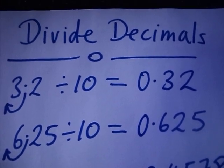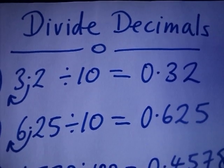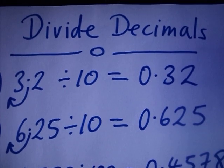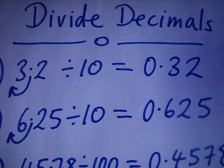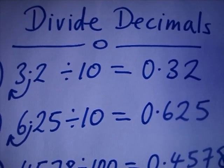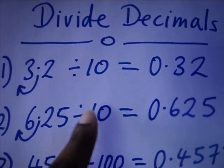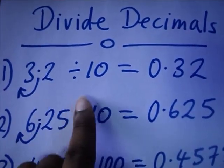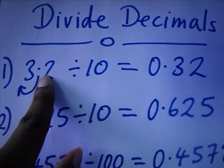We are now going to divide decimals by multiples of 10. Just like the previous tutorial where we multiplied decimals by multiples of 10 — when we multiply, we shifted the point to the right — but when you divide by multiples of 10, you must shift the point not to the right but to the left. So for example, you have 3.2 divided by 10.